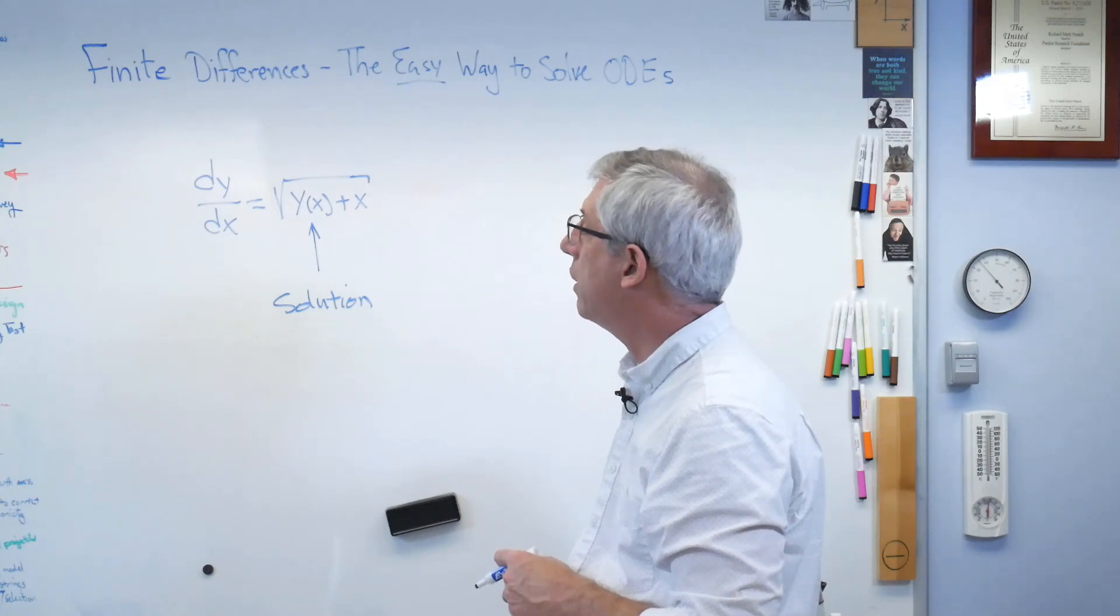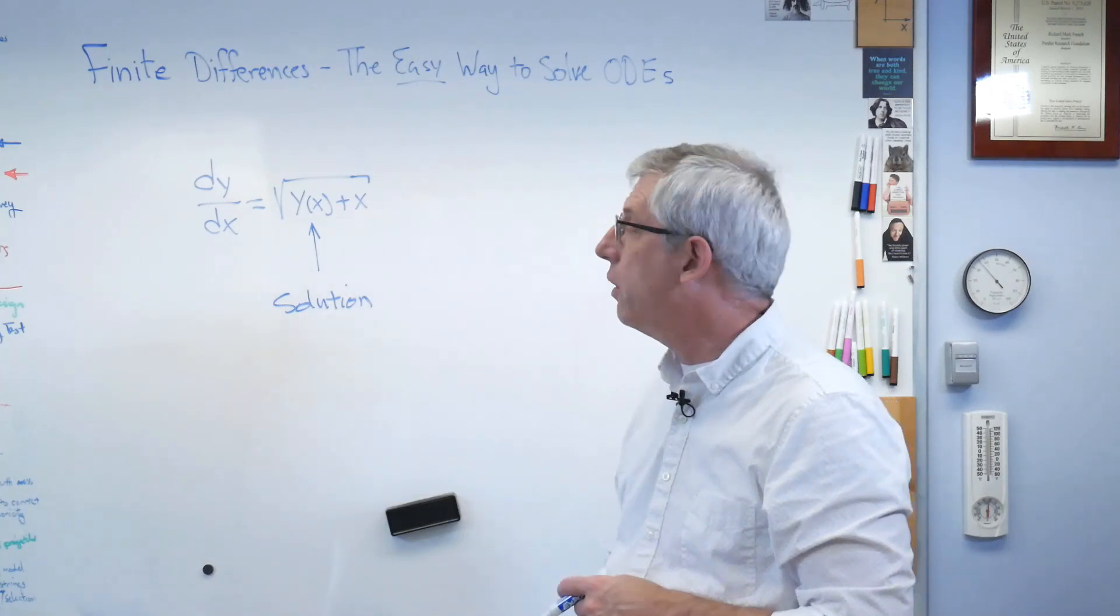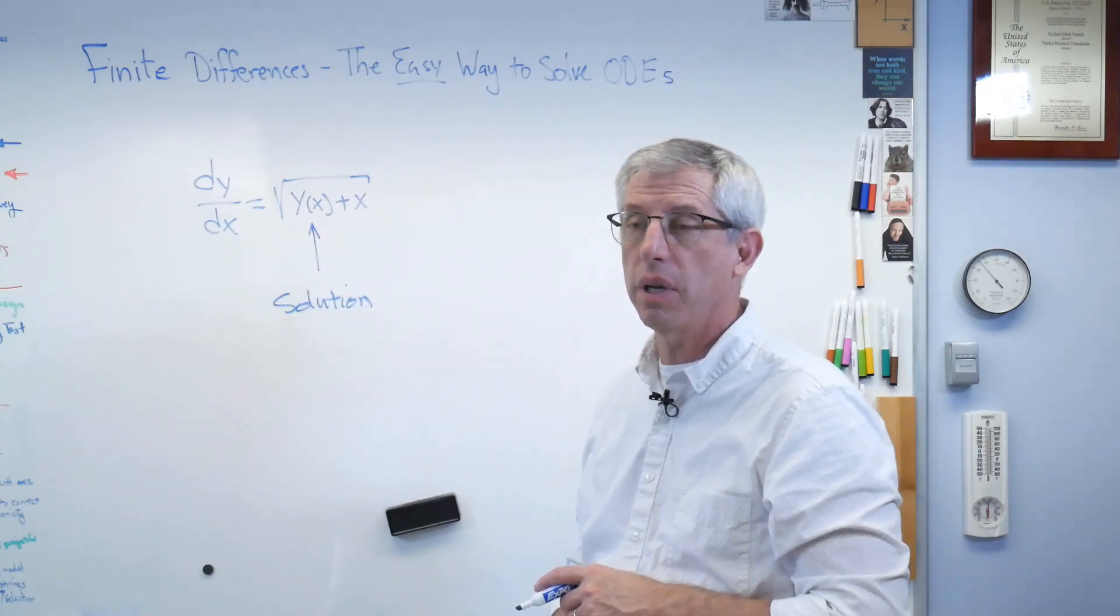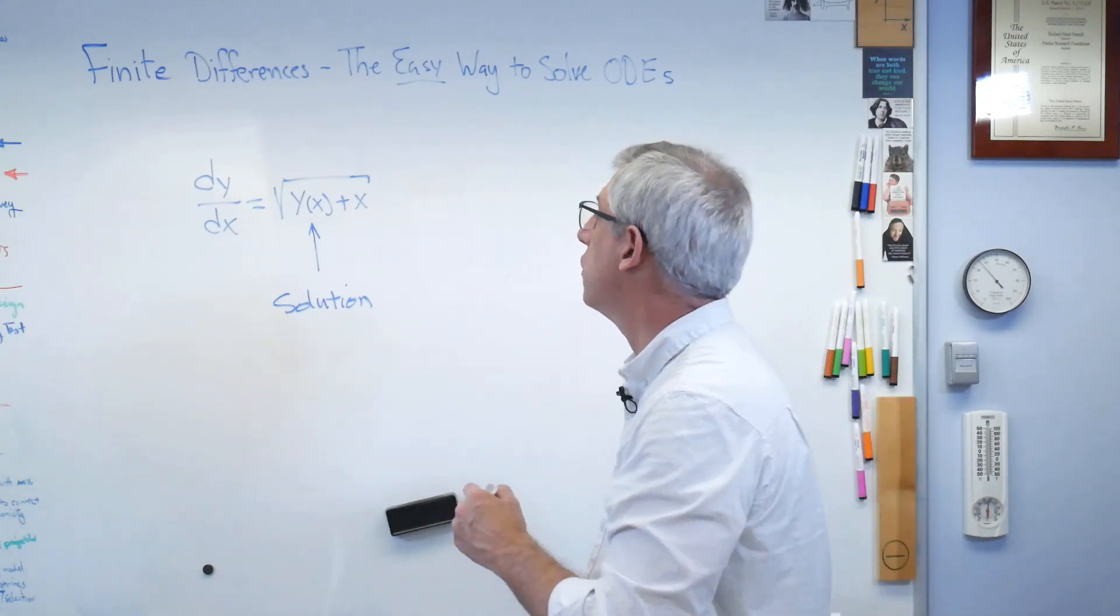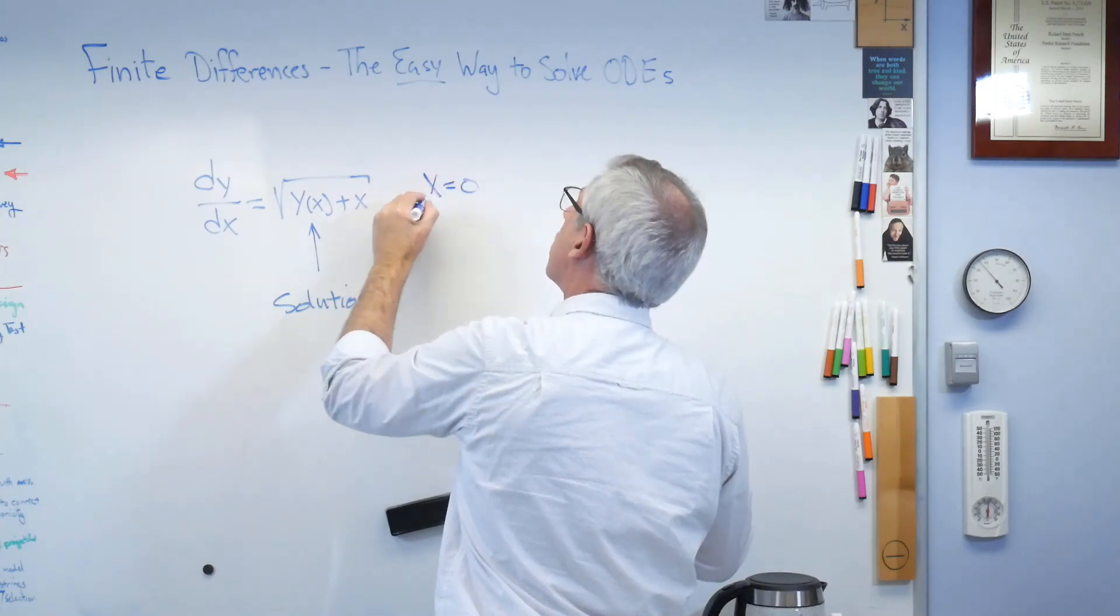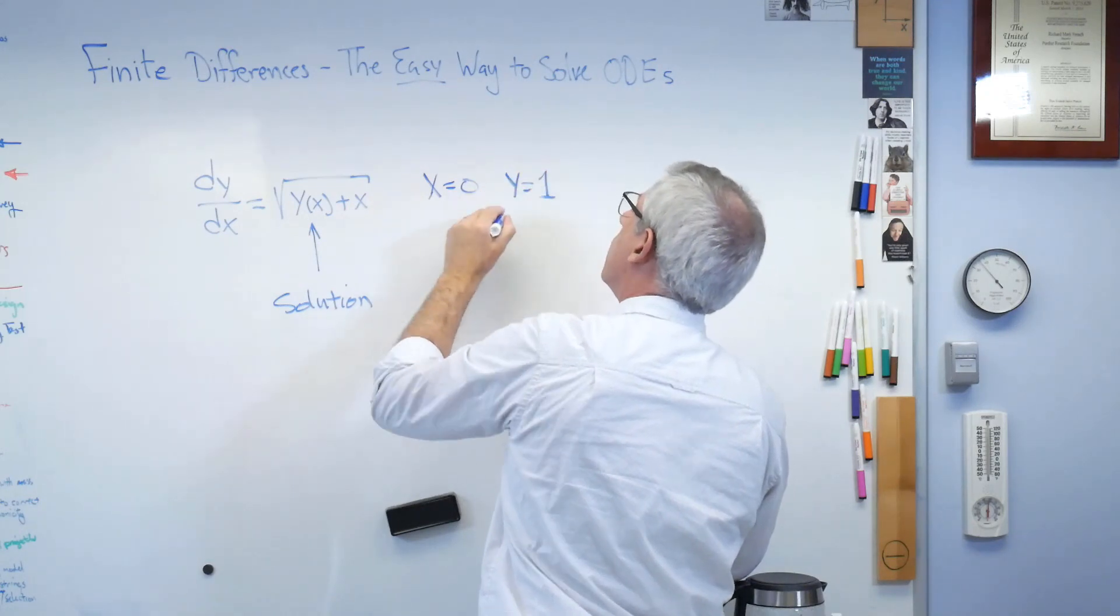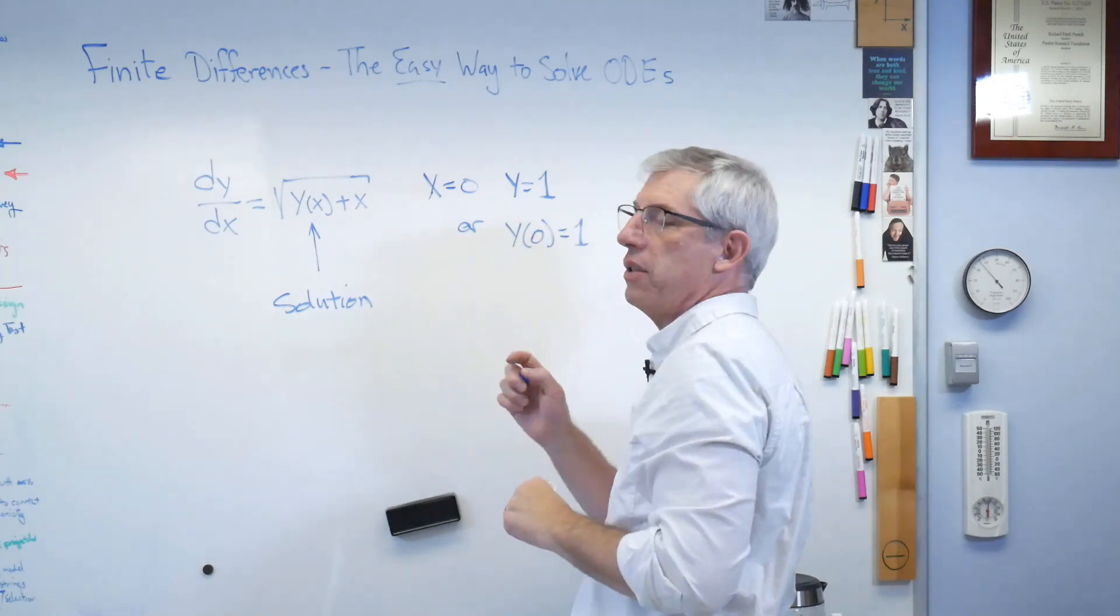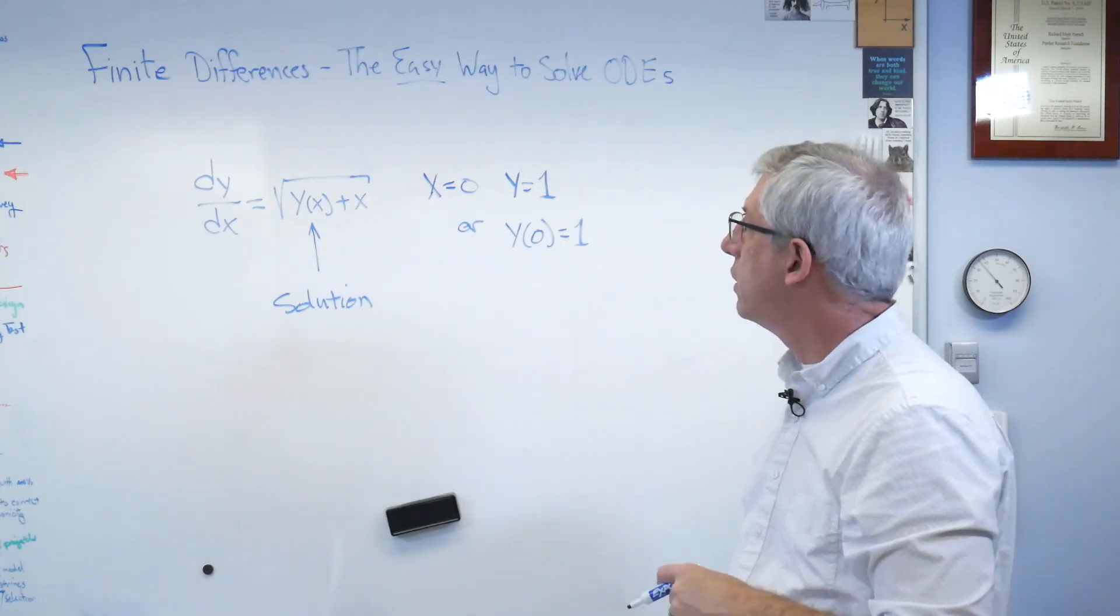Now, this is a particular kind of equation called an ordinary differential equation because it only has one independent variable. And in order to completely solve this, we need to know one point on the curve. There's a whole class of curves that will solve this. We need to know one of the points on the curve, and if we know that one, then we'll know which curve to pick out. So it's usually an initial condition. So in this case, I'm going to say at x equals 0, y equals 1, or y of 0 equals 1. They mean the same thing, but that's the initial condition. If I know one point, I can figure out the whole rest of the curve. So that's what we're about to do.